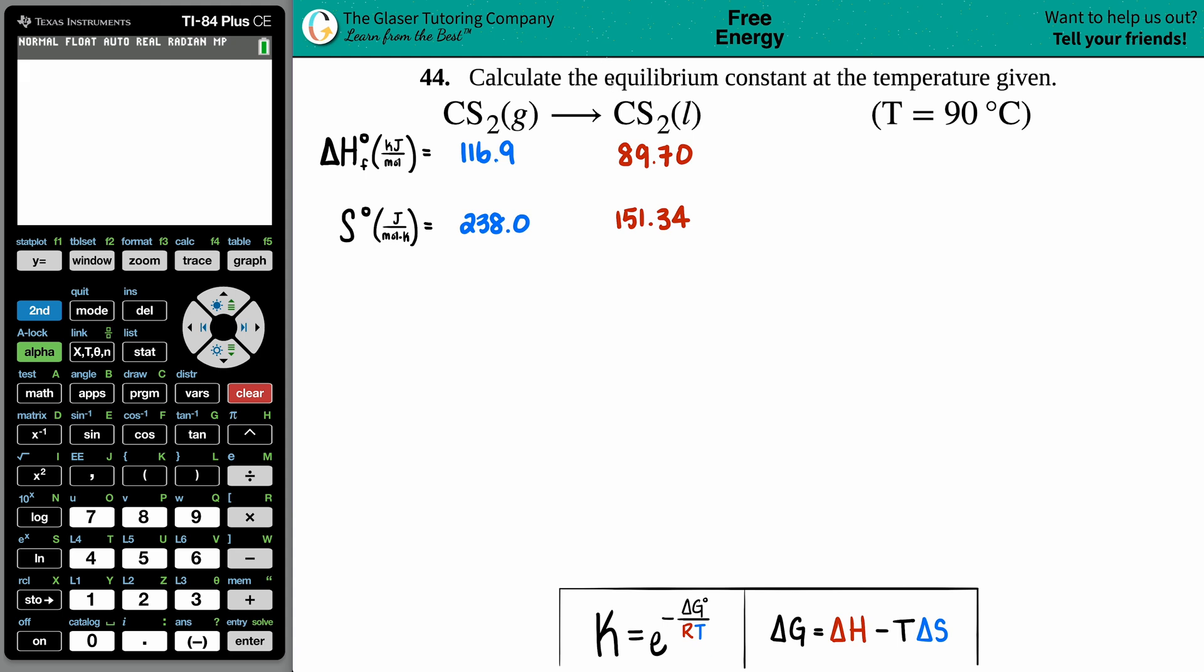Number 44: Calculate the equilibrium constant at the temperature given. They give us this balanced equation: CS₂ gas yields CS₂ liquid. So it looks like we are condensing, going from a gas to a liquid, and we're doing that at 90 degrees Celsius. From that temperature we have to find out the equilibrium constant.